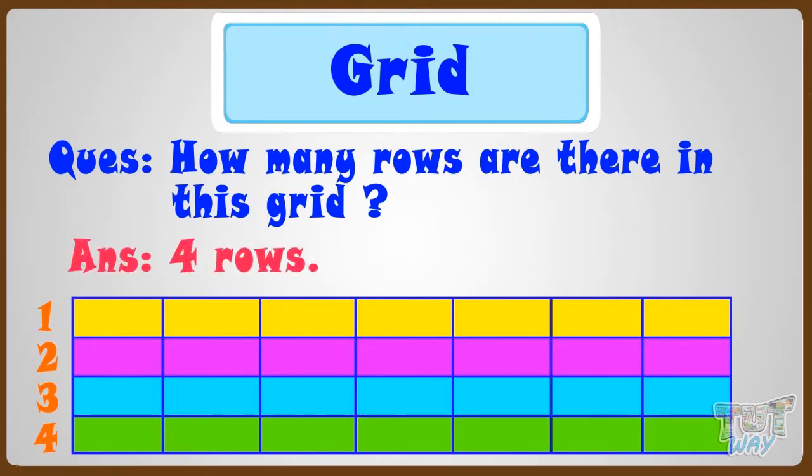and we can name the rows by numbers or alphabets. So, let the names of rows be 1, 2, 3, 4.